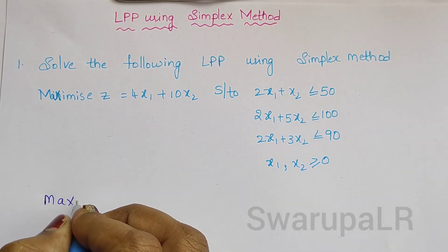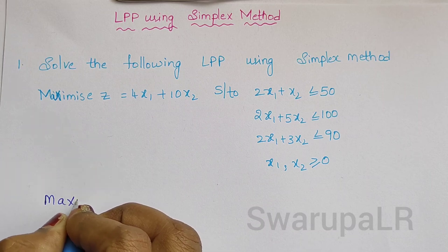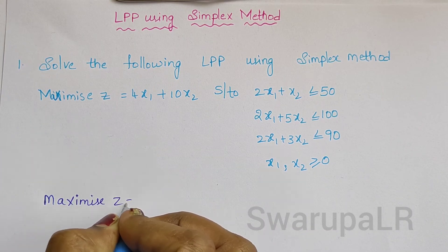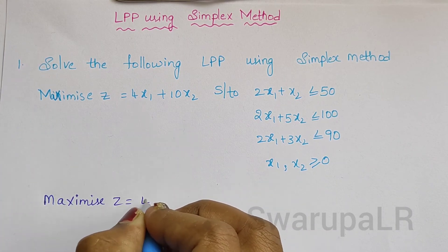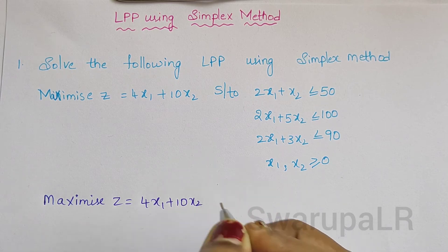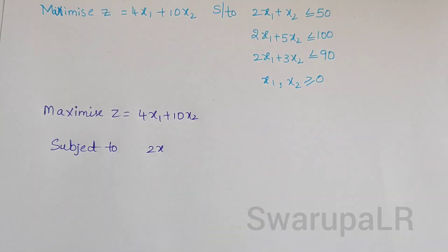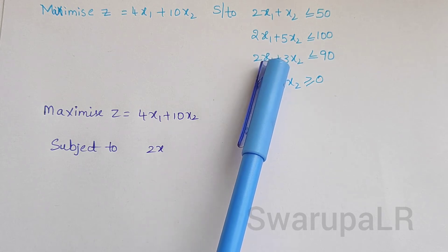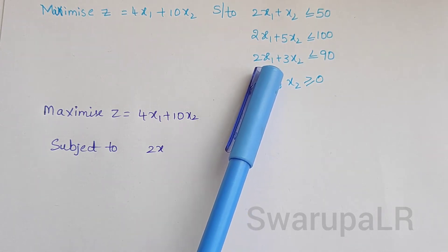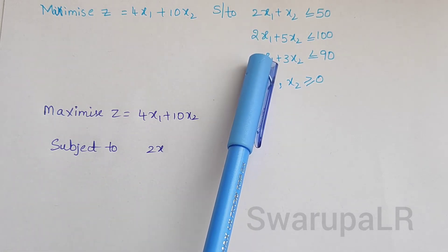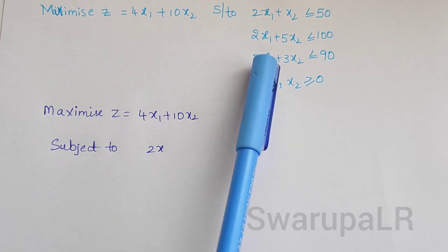The objective function is maximization: maximize z equals to 4x1 plus 10x2. We have to convert these three constraints into equalities. In the process of converting, we have to introduce the slack variables in the three equations.